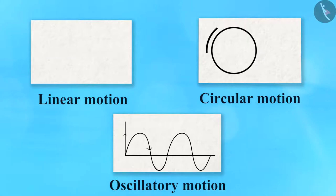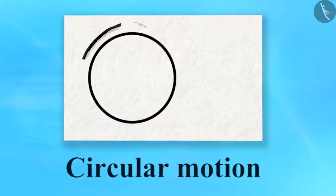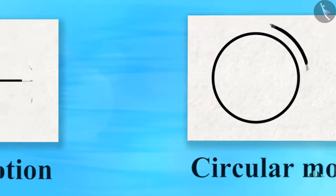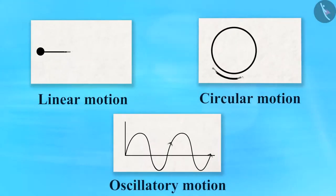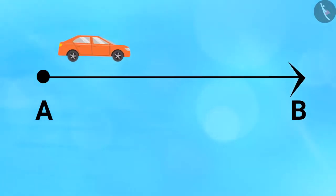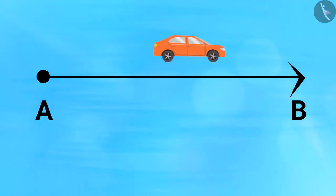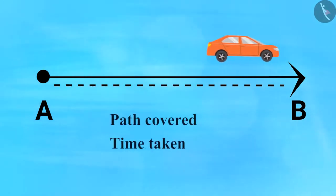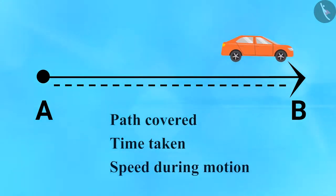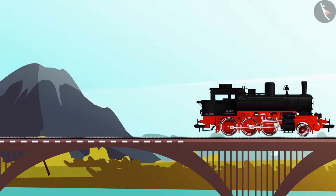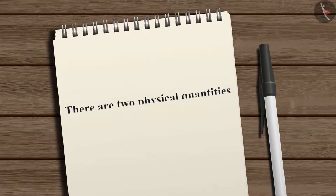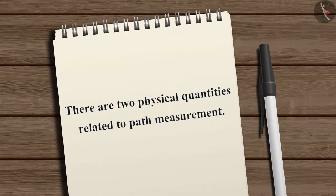Motion is of many types: circular motion, linear motion, oscillatory motion, etc. While observing the motion of an object, we have to calculate certain parameters like path covered, time taken, and speed.